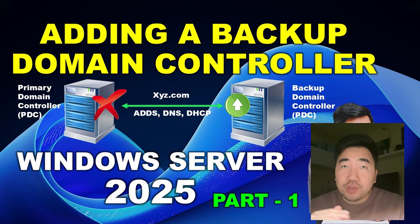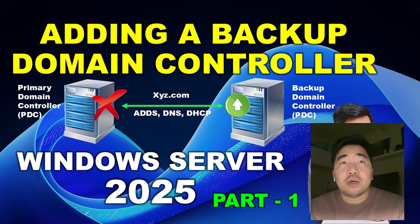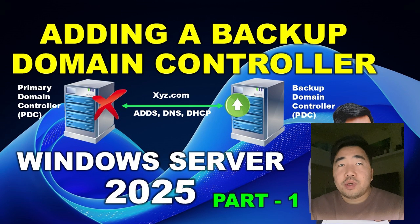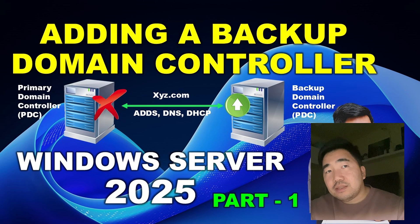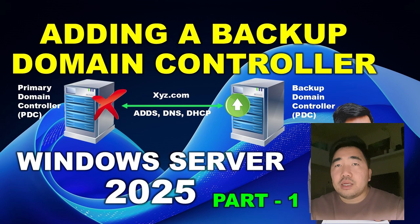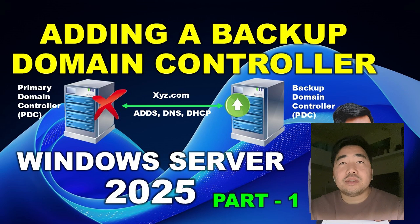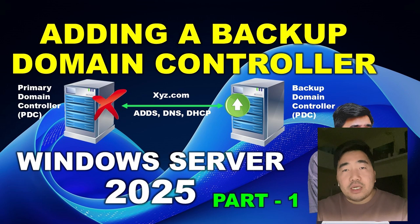Failover refers to the automatic switching to a standby or redundant system, server, or network component when the primary one fails. Why is failover configuration important? Number one, high availability ensures continuous uptime for critical systems and services. Number two, disaster recovery provides a backup plan for quick restoration during unexpected failures. Number three, fault tolerance allows the system to operate despite component failures. Number four, load balancing distributes load across multiple systems to improve performance. Compliance and reliability meets industry regulations and enhances system reliability. Implementing failover configurations helps maintain the resilience and reliability of IT infrastructure.